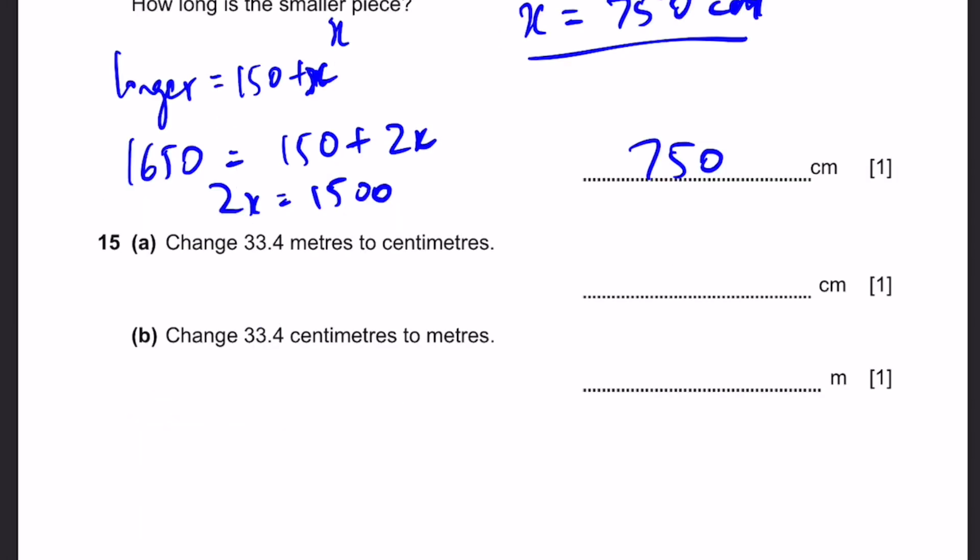Question 15. A. Change 33.4 meters to centimeters. We simply multiply by 100, so we get 3340 centimeters. B. Change 33.4 centimeters to meters. Simply divide by 100, so we get 0.334 meters. That's the answer.